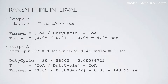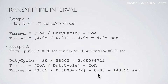Example 2: if the total uplink time on air is 30 seconds per day per device and the time on air is 0.05 seconds, then first you calculate the duty cycle, which is 0.00034722. The transmit time interval will be 143.95 seconds.